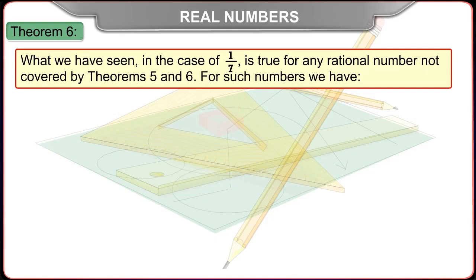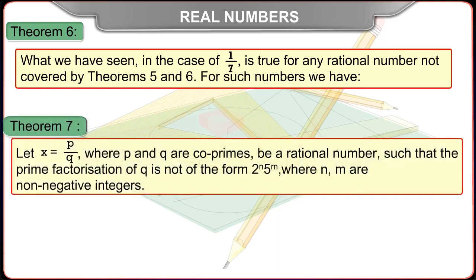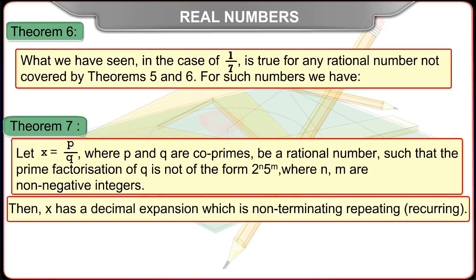What we have seen in the case of 1 upon 7 is true for any rational number not covered by Theorems 5 and 6. For such numbers we have Theorem 7: Let x equal to p upon q, where p and q are co-prime, be a rational number such that the prime factorization of q is not of the form 2 raised to n into 5 raised to m, where n, m are non-negative integers. Then x has a decimal expansion which is non-terminating repeating, i.e. recurring.